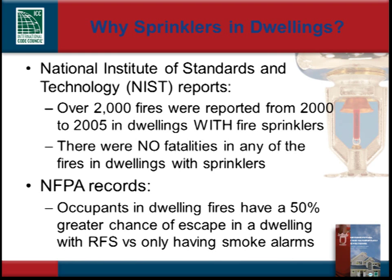Fire loss records attest to the life-saving ability of residential fire sprinklers. NIST studied reports of over 2,000 fires in dwellings equipped with residential fire sprinklers. Based on our national average of one death for every 133 fires, these 2,000 fires should have resulted in at least 15 fire deaths. But amazingly, there was not even a single fatality. Data from the NFPA confirms that occupants in dwelling fires have a 50% greater chance of escape when the dwelling has a residential fire sprinkler system versus only having smoke alarms.